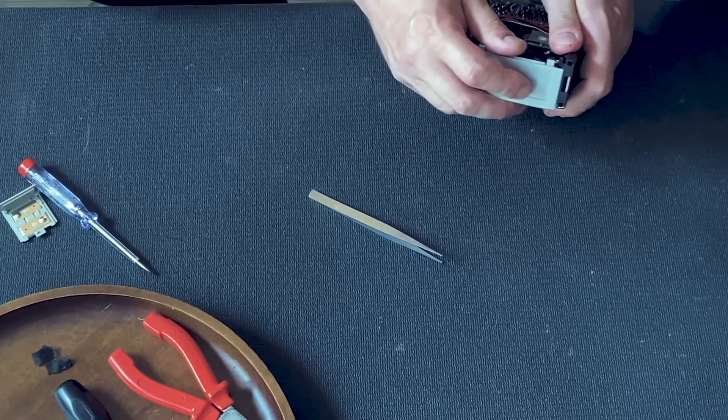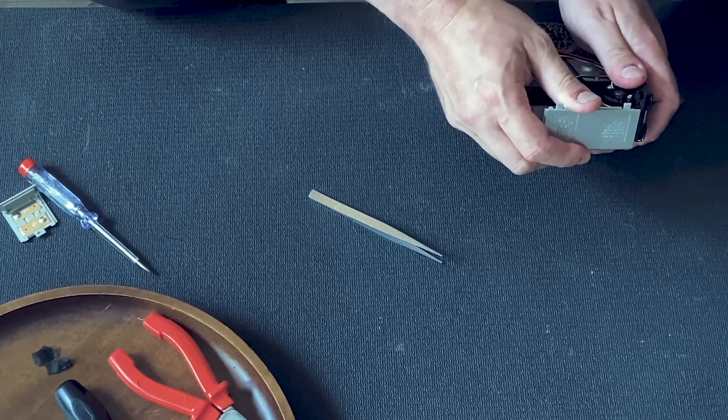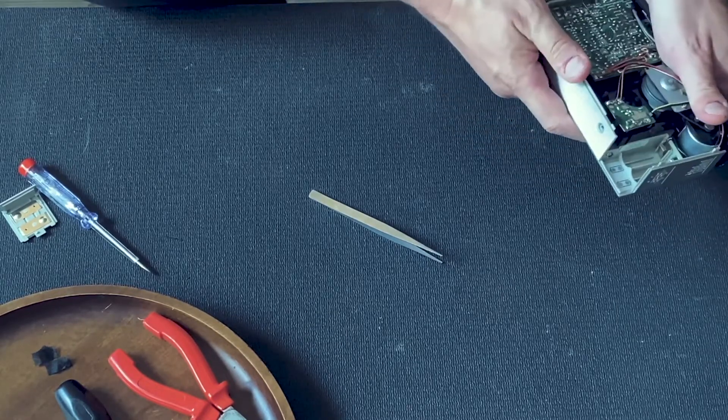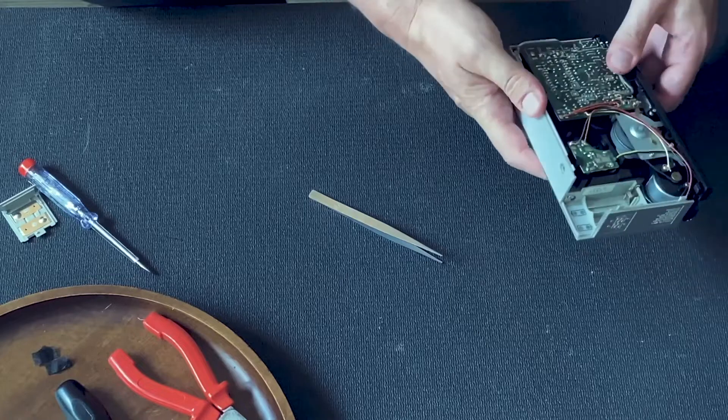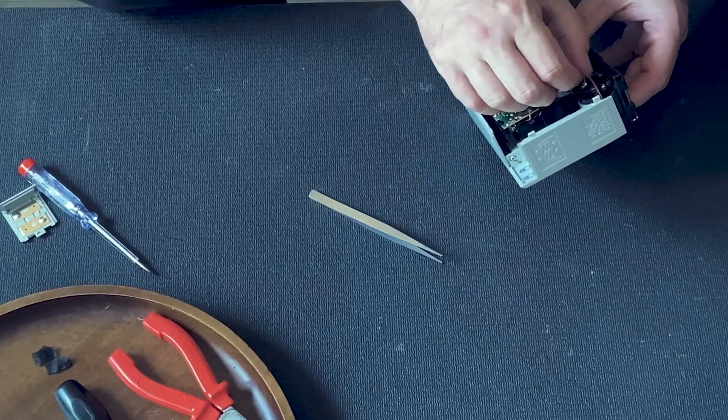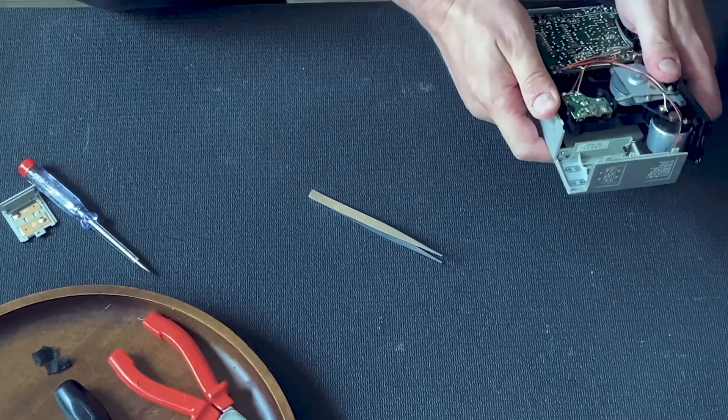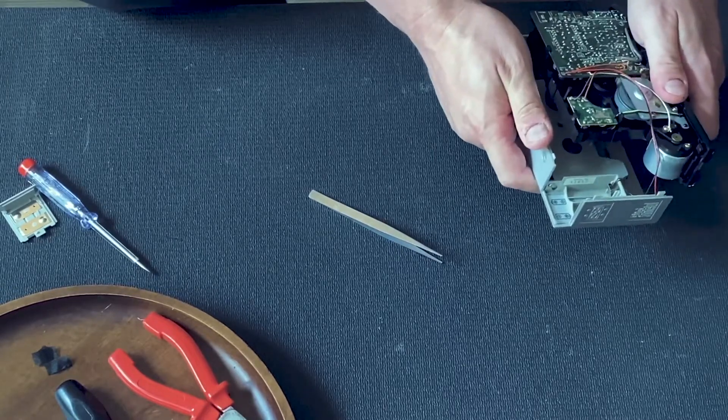Step 5: Carefully remove the housing. This step requires extra caution. Gently remove the front part of the enclosure, starting from where the motor is located. Be extremely careful with the cables—they're delicate and can easily be damaged. If you're not experienced with soldering, avoid pulling or stressing any connected cables.